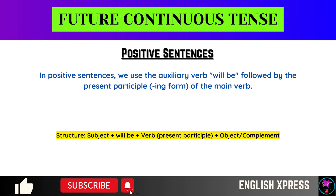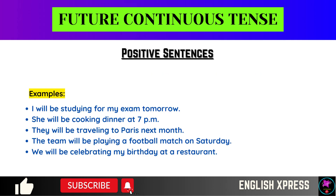In positive sentences, we use the auxiliary verb 'will be' followed by the present participle ing form of the main verb. Examples: I will be studying for my exam tomorrow. She will be cooking dinner at 7 p.m. They will be traveling to Paris next month. The team will be playing a football match on Saturday. We will be celebrating my birthday at a restaurant.